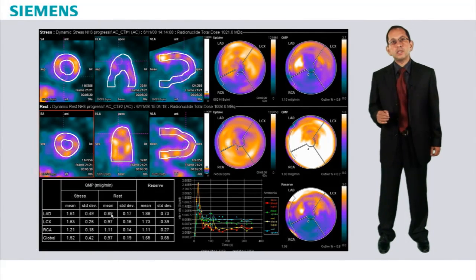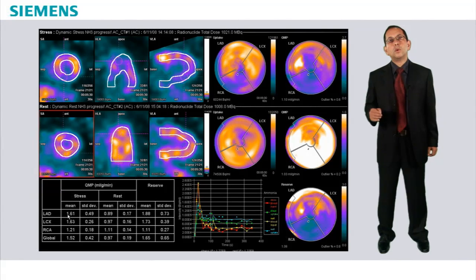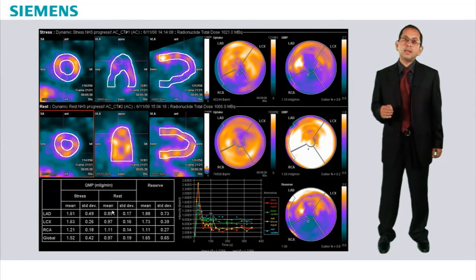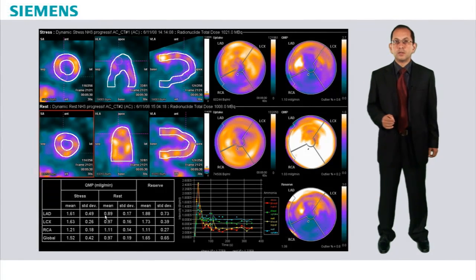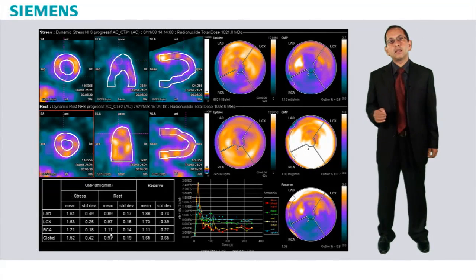However, we also see that there is significantly lower flow in the LAD and left circumflex areas. The resting flow is fairly normal and well preserved in the LAD and left circumflex, as well as in the RCA territories.